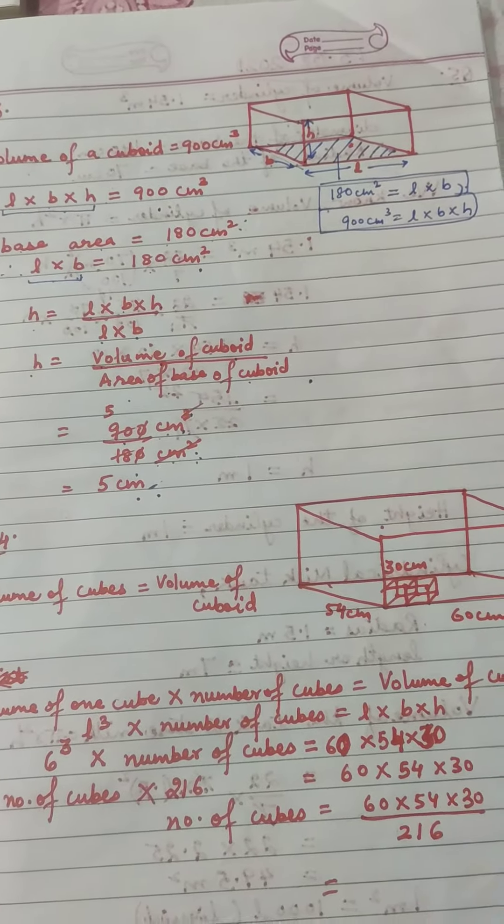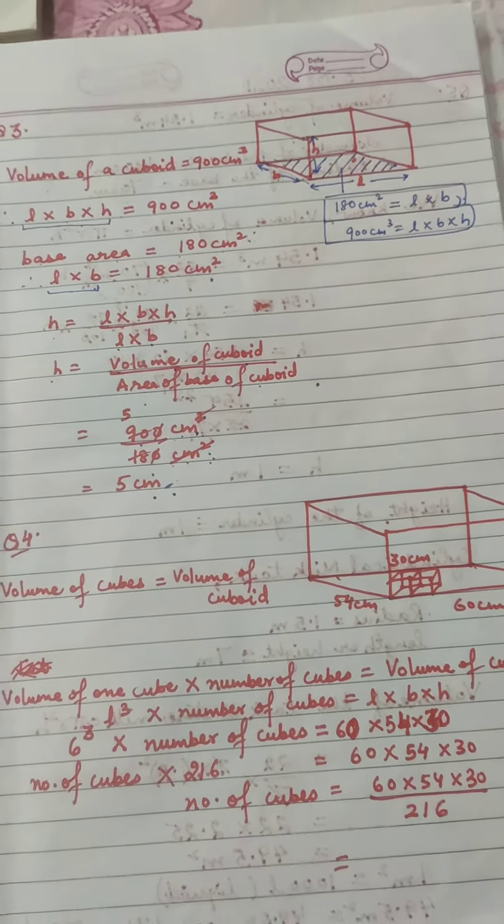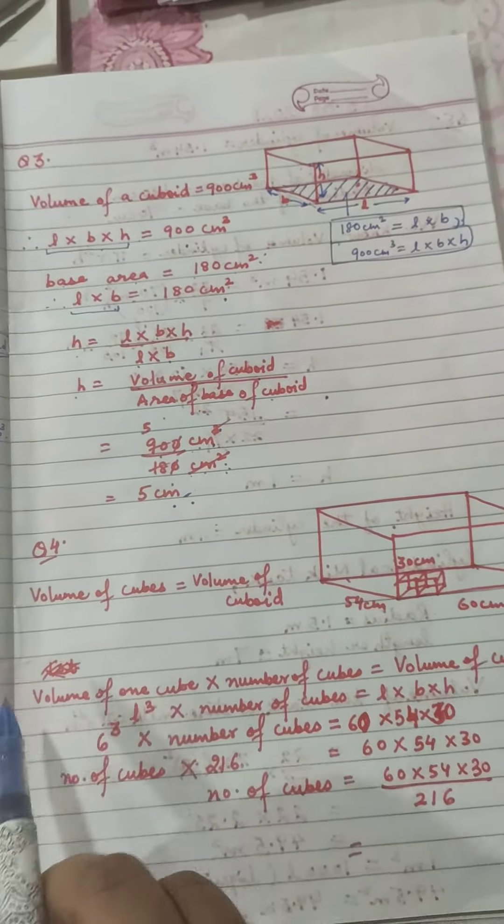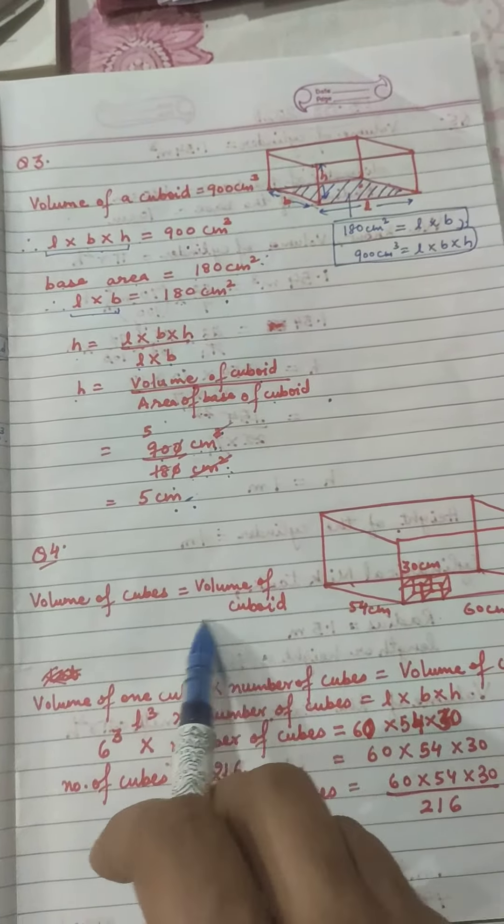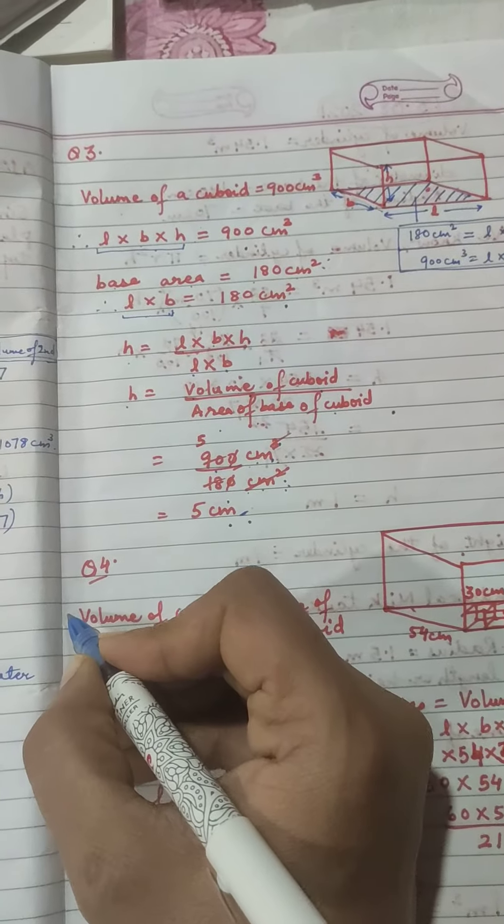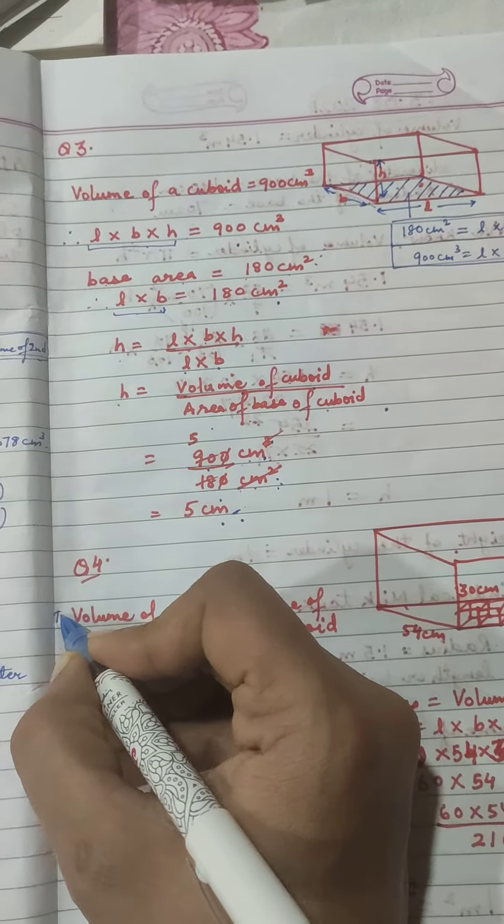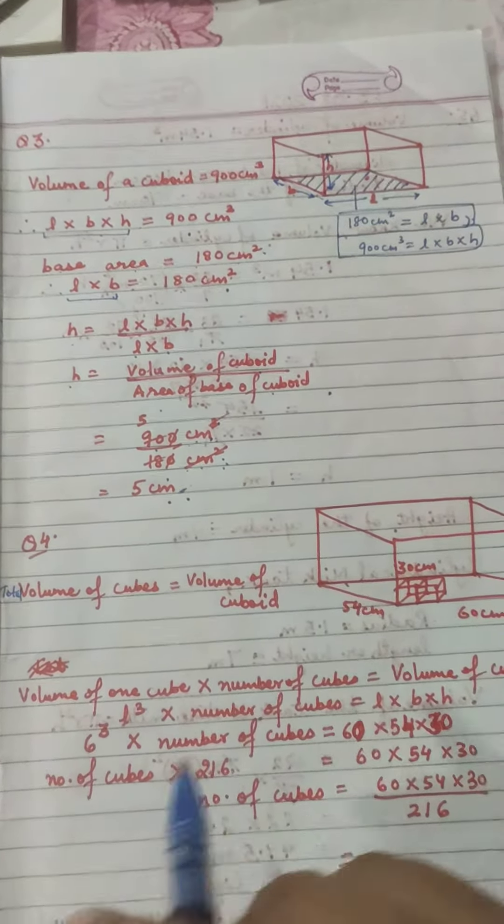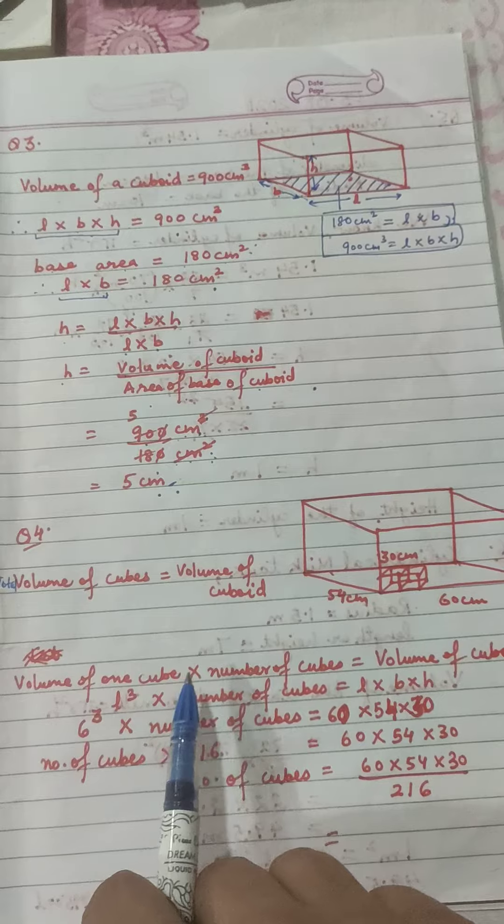We have to divide the volumes to get the number of cubes, to get the number of smaller units. Look, total volume of cubes is equal to volume of cuboid. Volume of one cube into